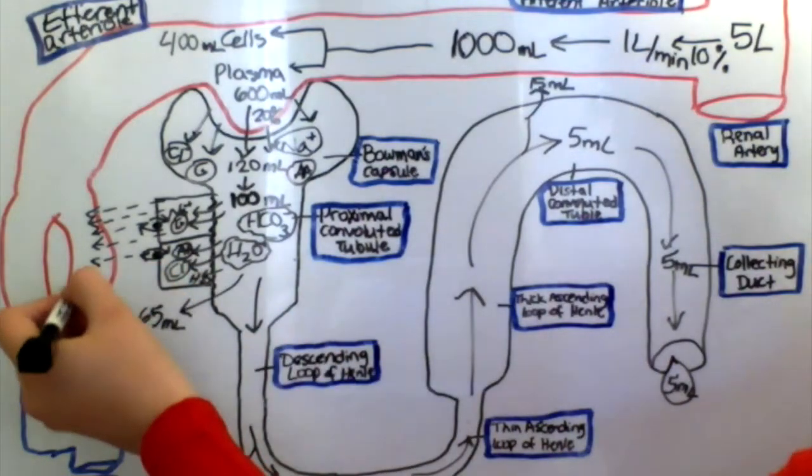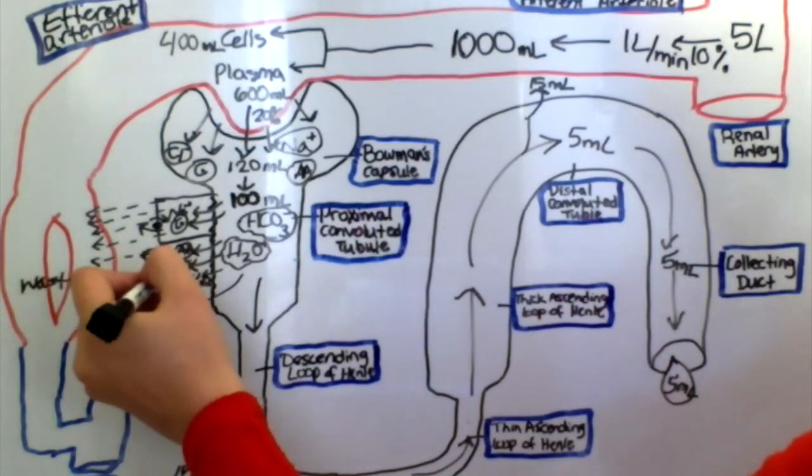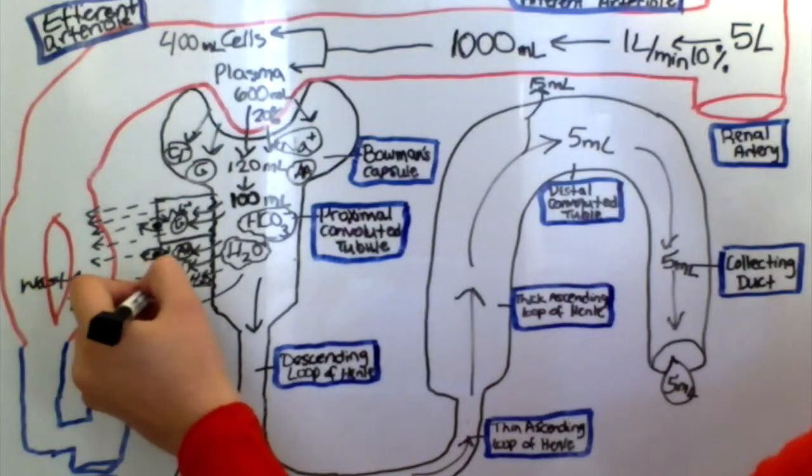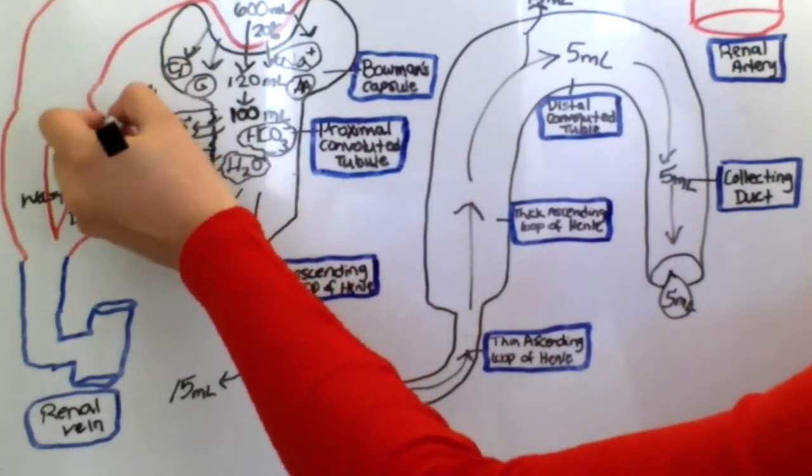Some waste and drugs that are not filtered into the Bowman's capsule are secreted through the peritubular capillaries. Most of the reabsorption and secretion occurs at the proximal convoluted tubule.